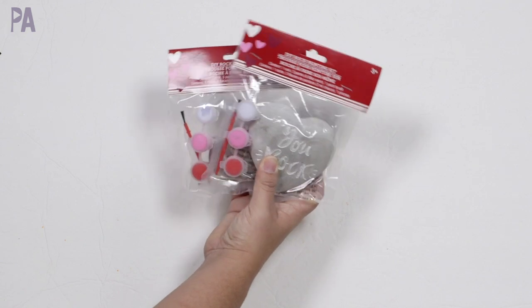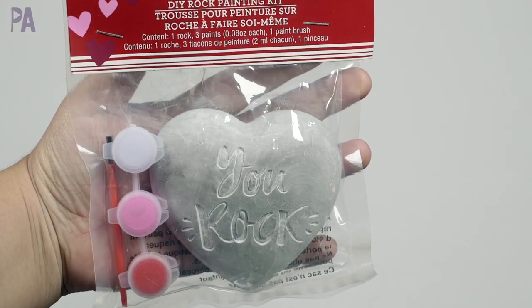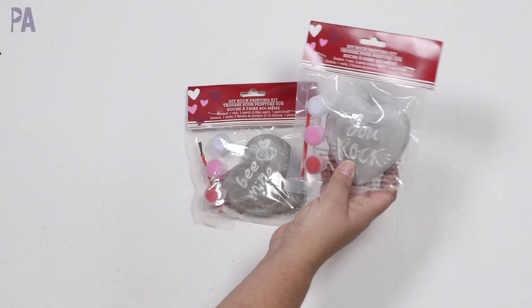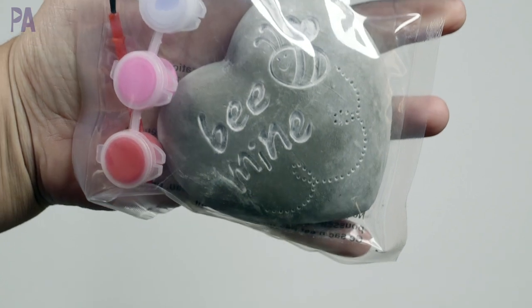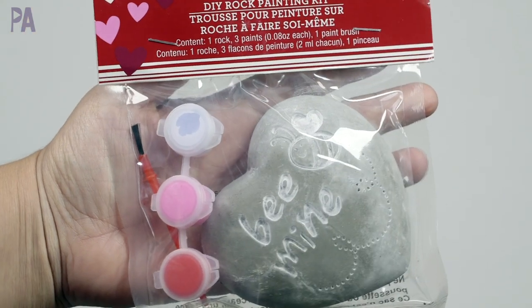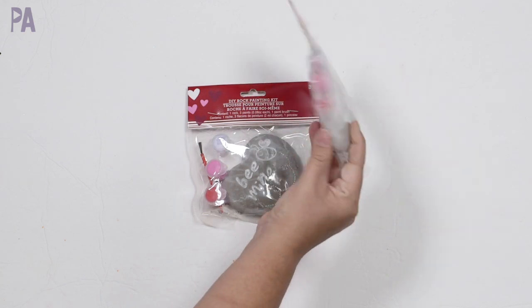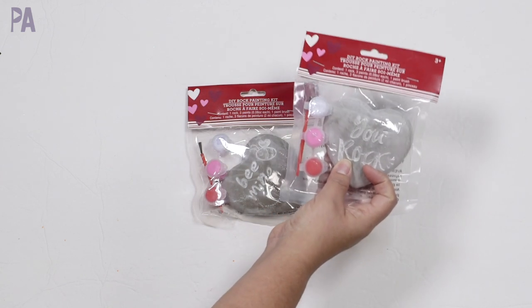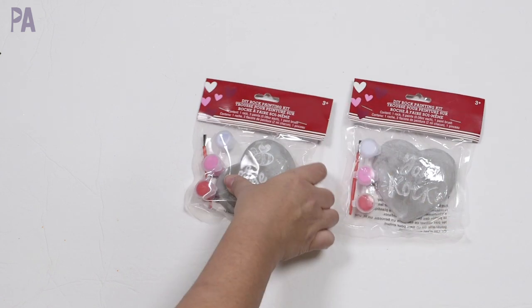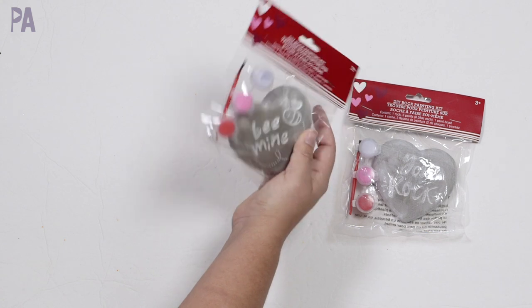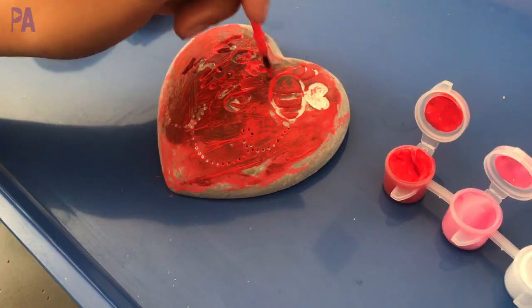Next up, we have the DIY rock painting kits. These are in the Valentine section and they actually have several different styles of these. I want to put them in the toy test to see how they did because usually we have those ceramic plaster painting kits at Dollar Tree that come with the paint and the paintbrush. But these are rocks or they appear to be rocks. It could actually be plaster. So I'm going to break these open, see how the paint works on them and how they end up looking. The one I have is You Rock. And then this one is Be Mine. I thought they'd be great gifts, especially for the little ones to make themselves.